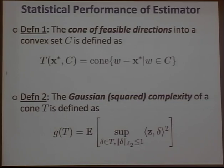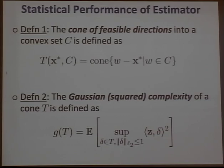On the statistical side, the key concept for characterizing estimator performance is Gaussian complexity. Given a cone T, the squared Gaussian complexity is the expected supremum over all normalized vectors in the cone of the inner product between Gaussian random noise and that vector. This is also called Gaussian width in some literature.